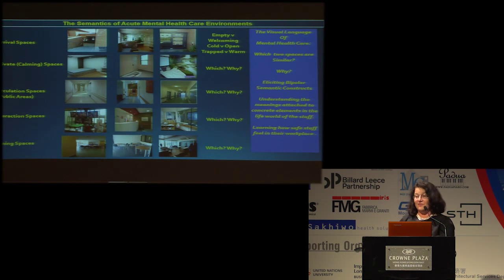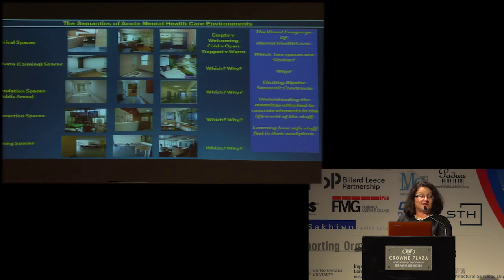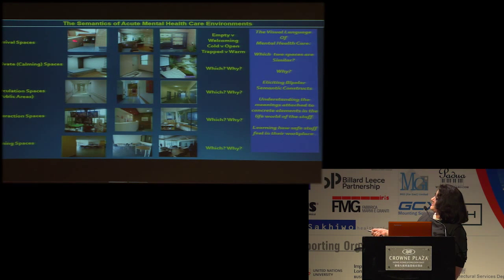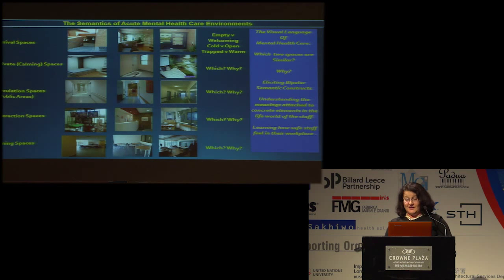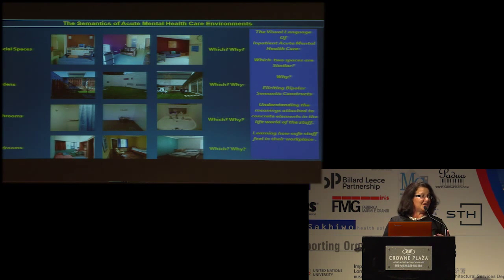Just a quick view of how you go about using the repertory grid technique: the first stage is to get triads of images, two of which will be alike and one won't. In this case, there are ugly spaces taken from facilities we looked at — entry places that are extremely poor, one's damaged, one has you falling down a narrow flight of stairs, and one is a pleasant space. These images are shown to people, and you get them to explain which two are alike and which are not. You get words like empty versus welcoming, cold versus open, trapped versus warm. We did that for ten different spaces, then a content analysis to get vocabulary, and a principal components analysis, introducing a Likert scale for some quantitative component.